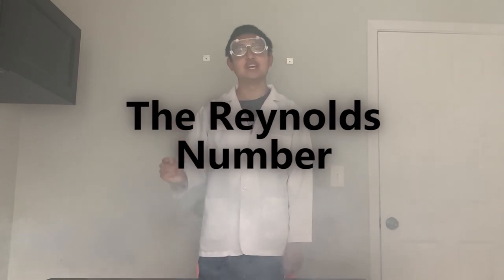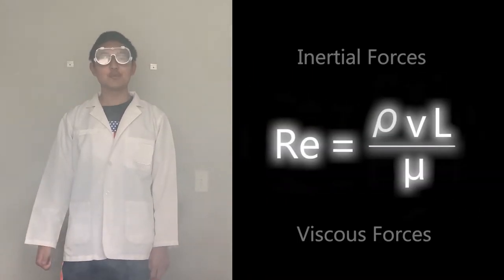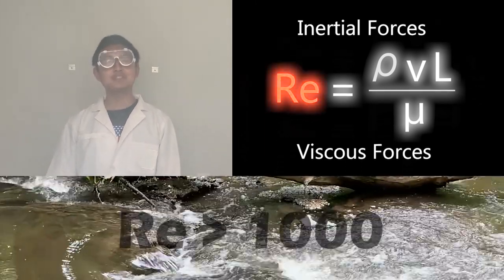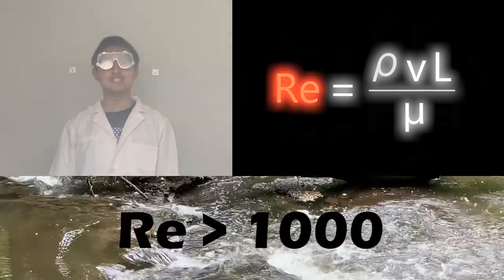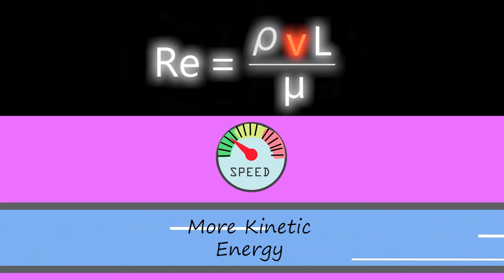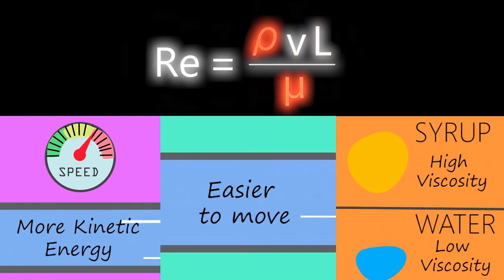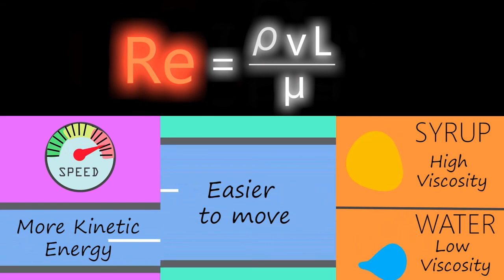Physicists also use another parameter called the Reynolds number to describe the behavior of fluids — the ratio of inertial to viscous forces. A higher Reynolds number means that the fluid is turbulent. Faster velocity, bigger pipe diameter, or lower viscosity all mean a higher Reynolds number and more turbulent flow.